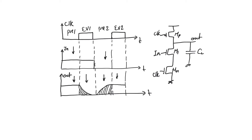It is also possible that we evaluated a one in the previous evaluate phase, meaning there will be no delay in the upcoming pre-charge. Similarly, if we are evaluating a one, there will be no change in the current evaluate. These are cases with no transition, but we must account for the cases where a transition does occur, because this is how delay arises.